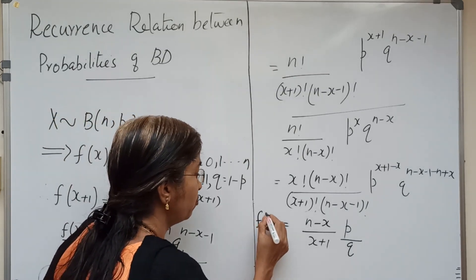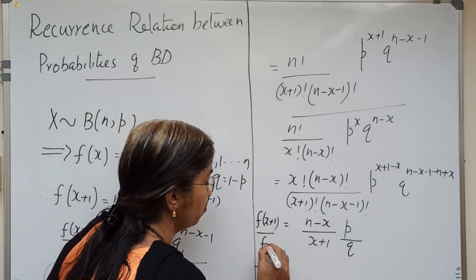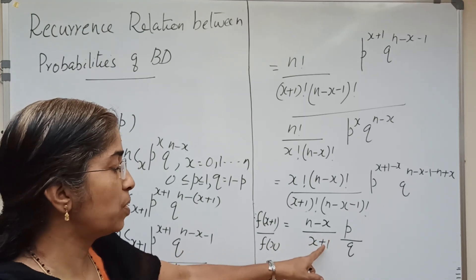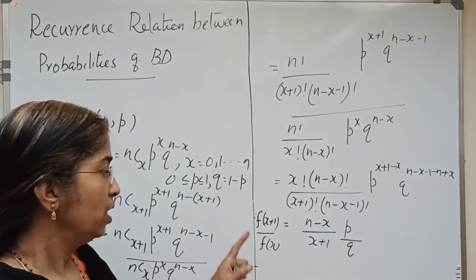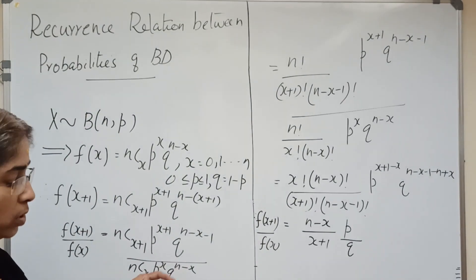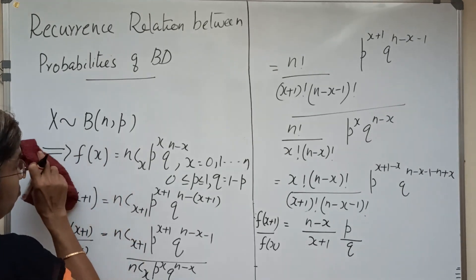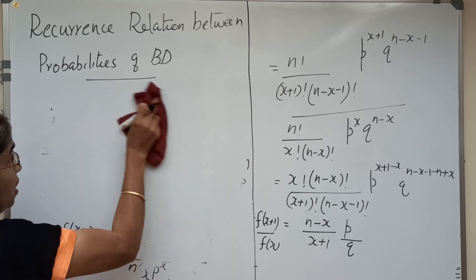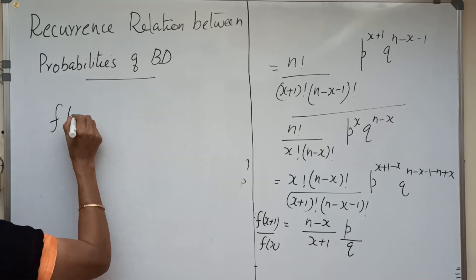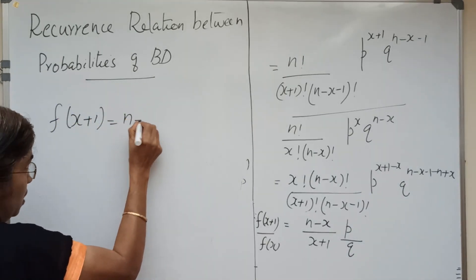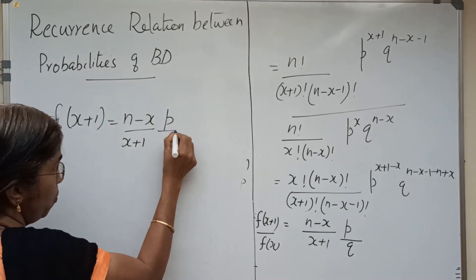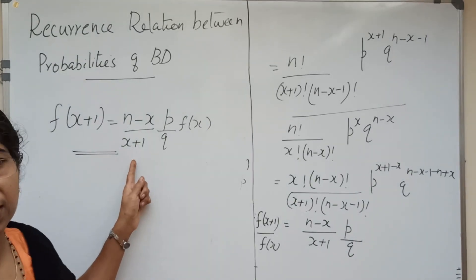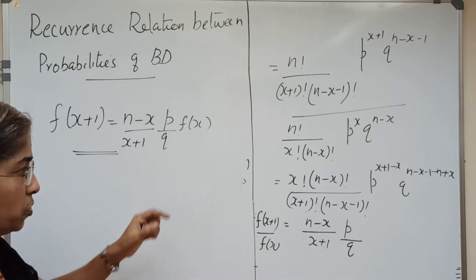So f of x plus 1 divided by f of x equals (n minus x) divided by (x plus 1), times p by q. Therefore, f of x plus 1 equals (n minus x) divided by (x plus 1), times p by q, times f of x.